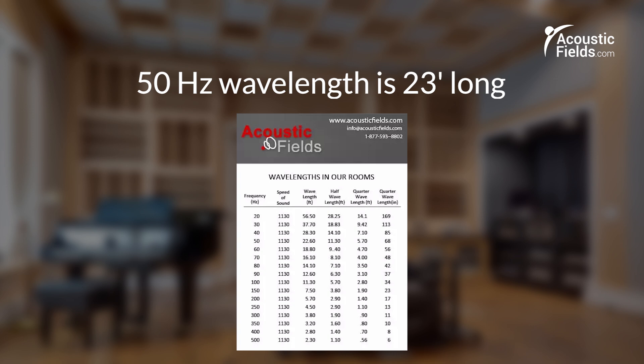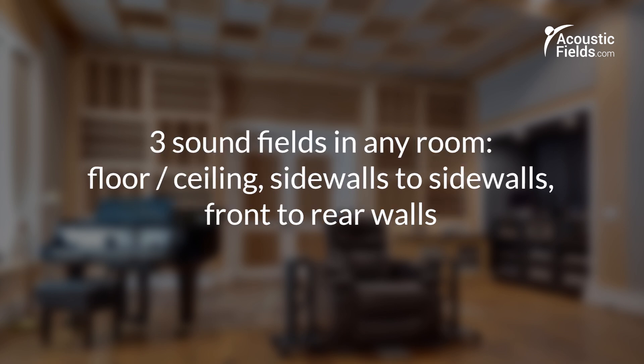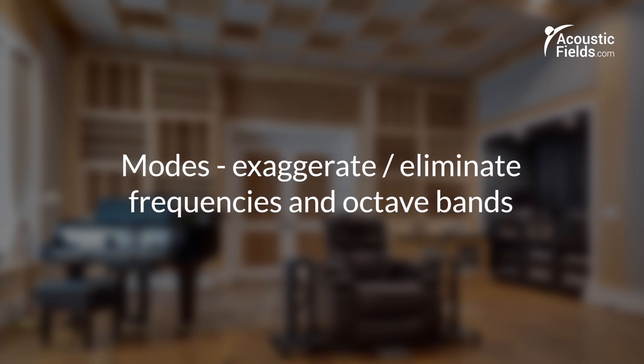What happens when the long wavelengths of pressure below 100 hertz don't fit? We know from past videos that those produce room modes. Room modes exist in three sound fields: floor to ceiling, sidewall to sidewall, and front to rear wall. When room modes occur, they exhibit two characteristics — they exaggerate energy at that particular frequency, or they eliminate it altogether. With room modes, there's very little in the middle; it's either too much or none at all. The bottom line is it's a form of distortion, and our goal is to minimize distortion so we improve resolution.